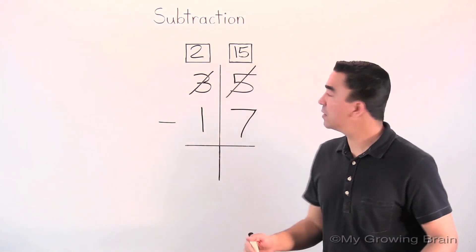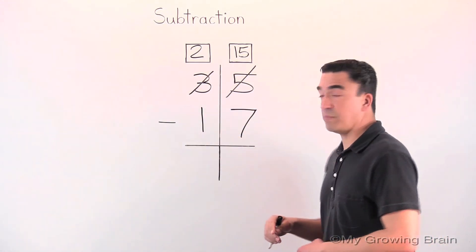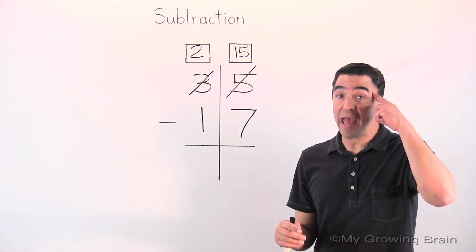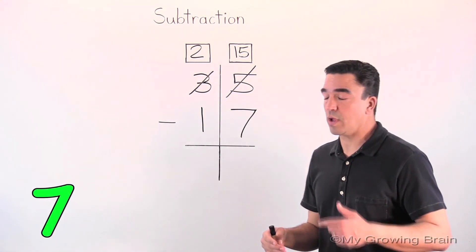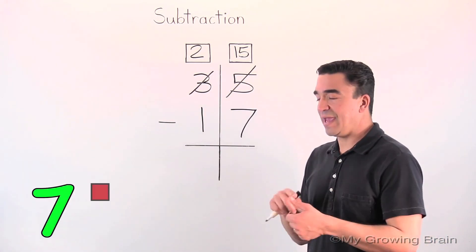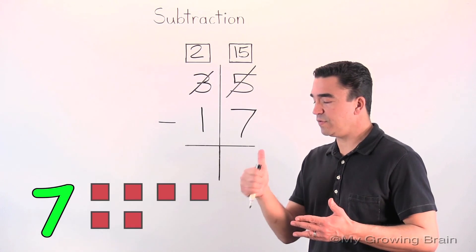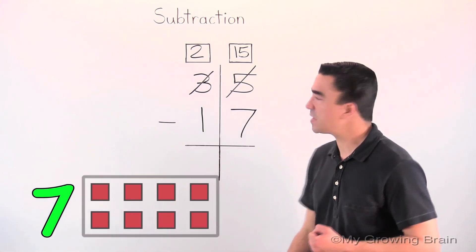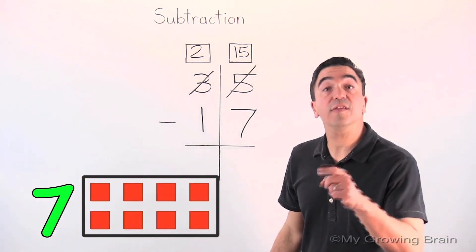Now we subtract. Fifteen minus seven. That's big. I'm going to count on again. I'm going to put the seven in my head and count up to fifteen. Seven, eight, nine, ten, eleven, twelve, thirteen, fourteen, fifteen. Fifteen minus seven is eight.